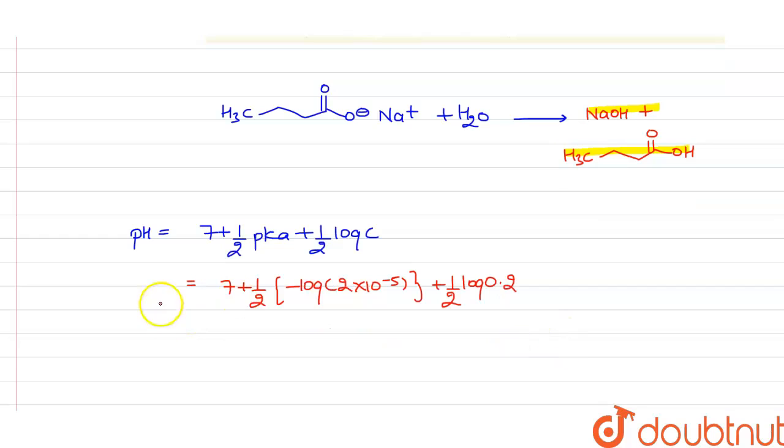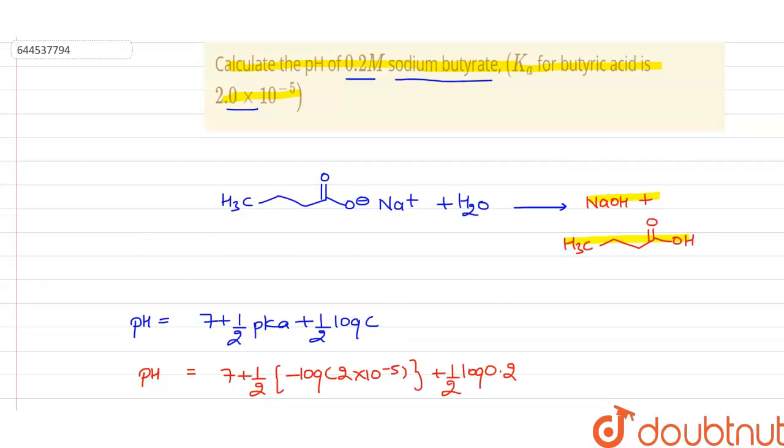So we can easily find the value of the pH and on solving it, we will get 7 plus 2.35 plus this will be overall in negative, that is minus 0.35. So the overall pH will be equal to 9. So this is the answer. I hope you got this concept. Thank you.